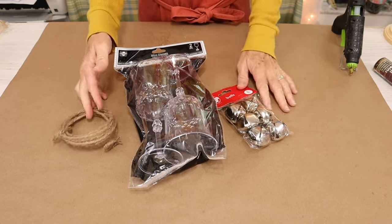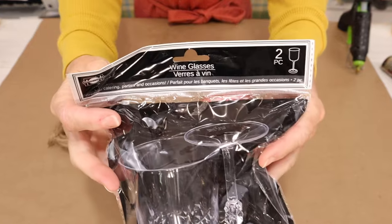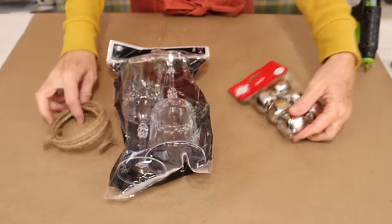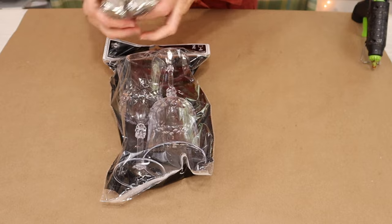This DIY was so much fun to make and here are some of the main supplies you'll need from the Dollar Tree. You'll need some of their plastic wine glasses, a set of their larger jingle bells, along with some of this wired jute twine from their floral department.